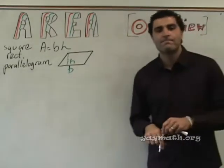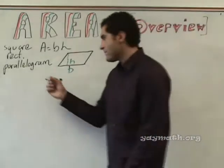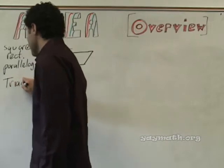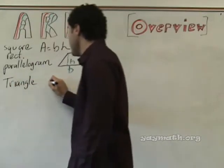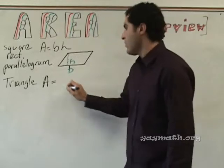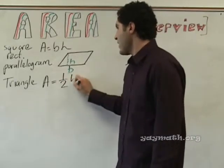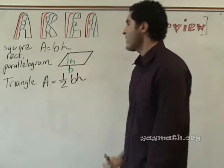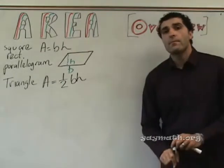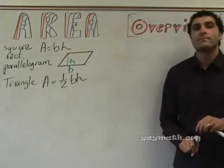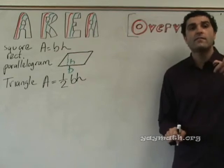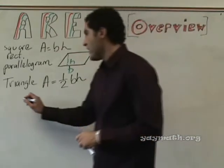Another shape, please. Triangle. Area equals? Base times height divided by two. This is the same thing: one half times base times height, which is base times height divided by two. You've seen that before.